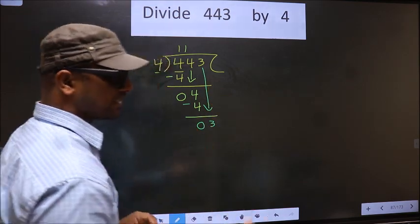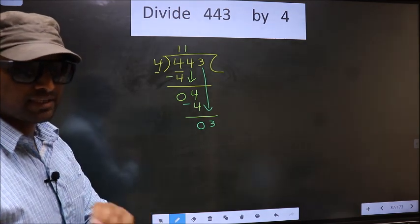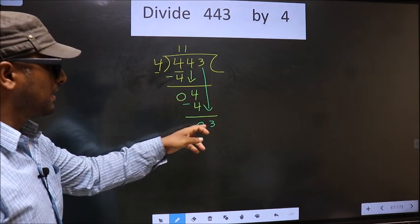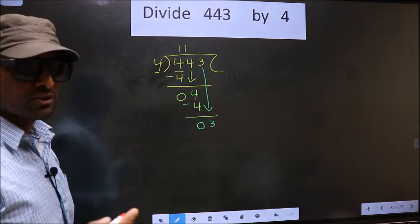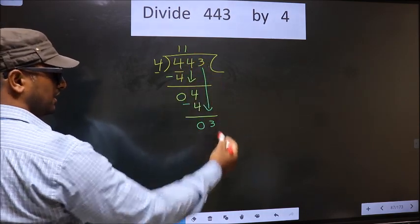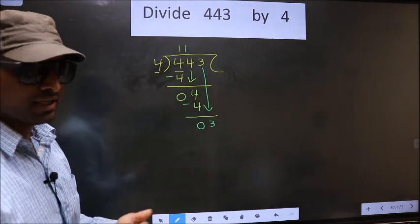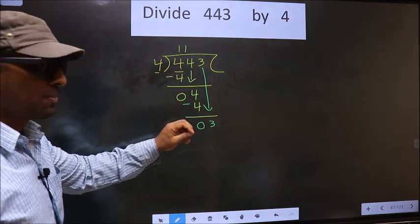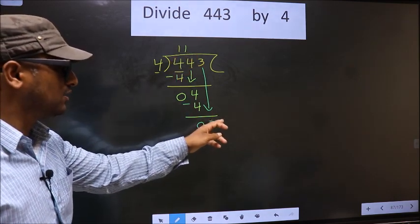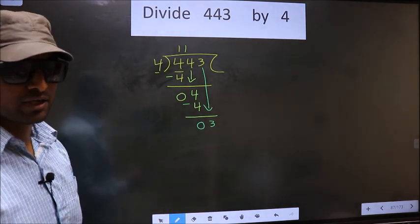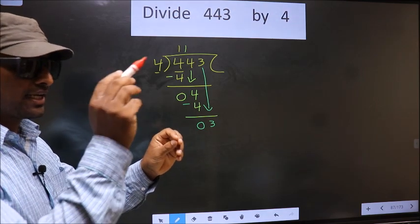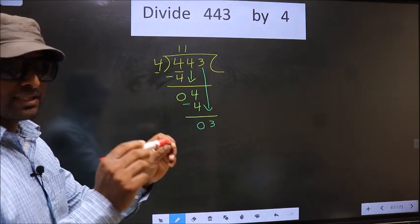This is where the mistake happens. Here we have 3, here 4. 3 is smaller than 4. So what many do is they put a dot and take 0 here, which is wrong. Just now you brought the number down, and in the same step you want to put a dot and take 0 here, which is wrong. I repeat: bringing the number down and putting a dot and taking 0 both at the same step—you are not supposed to do this.